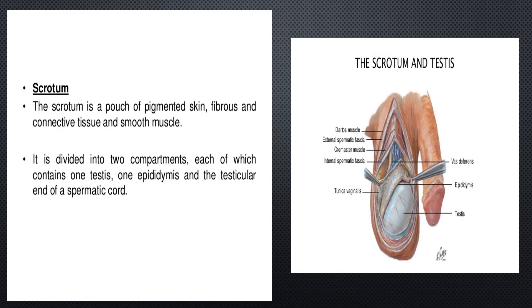Here is the diagram of the scrotum and the testes. You can see the vas deferens and tunica vaginalis. The scrotum is a pouch of pigmented skin, fibers, connective tissue, and smooth muscle, divided into two compartments, each containing one testis, one epididymis, and the testicular end of the spermatic cord. You can also see the dartos muscle, which helps in erection, and the external spermatic fascia.